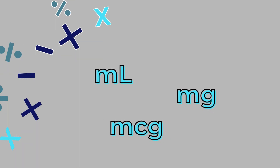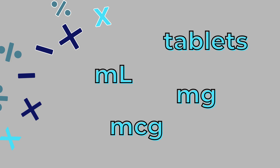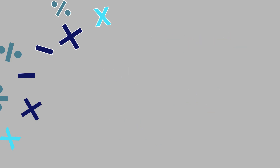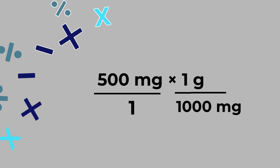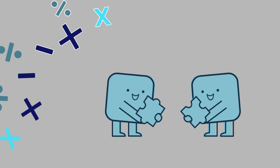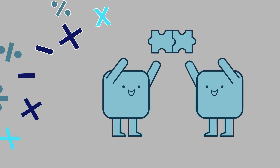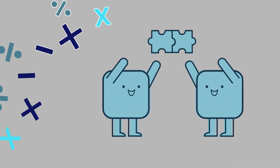So what exactly is dimensional analysis? Think of it as a problem-solving method that uses units as your guide. Instead of plugging numbers into a memorized formula, you build a setup that lets the units do the work for you. Each step in your chain cancels out one unit and brings you closer to the one you need, until all that's left is your answer. It's like putting puzzle pieces in order — when it fits, it flows, and when it flows, you can trust your math.